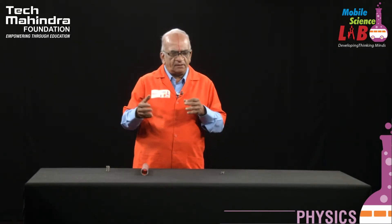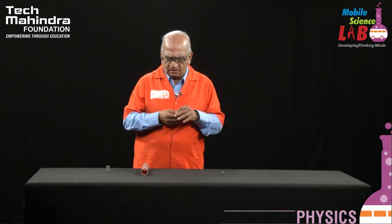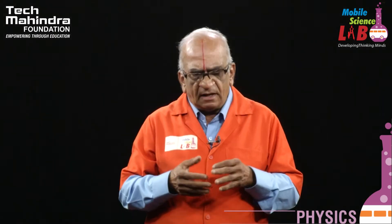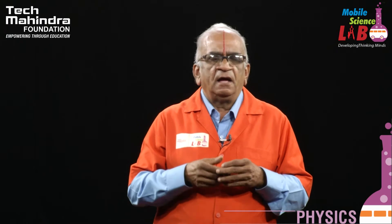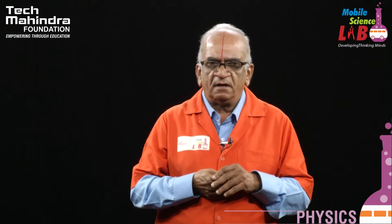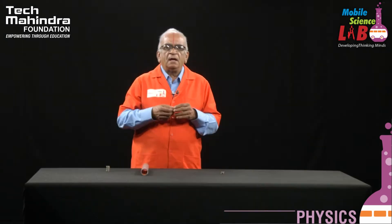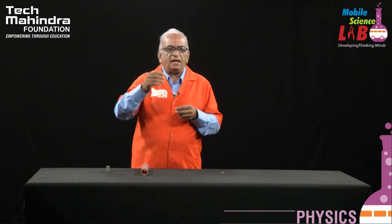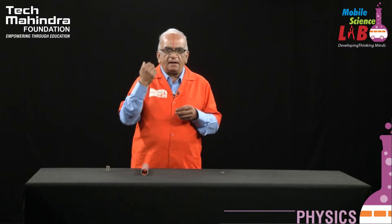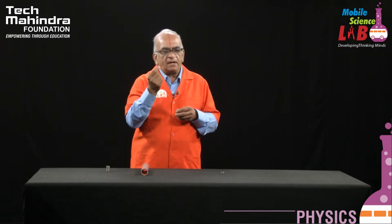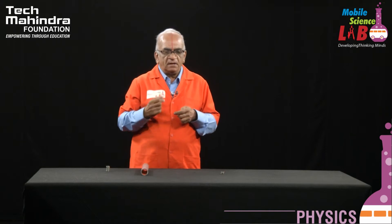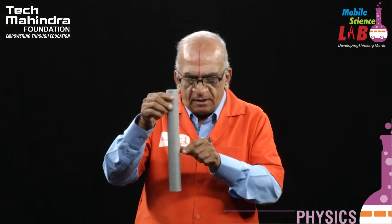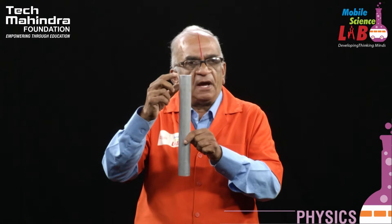Now we will test with different materials and see the effect. Lenz's Law can be defined as: whenever a magnet is allowed to fall freely in a current-carrying conductor which is not a magnetic one — that means the material we are taking should not be a magnetic material.